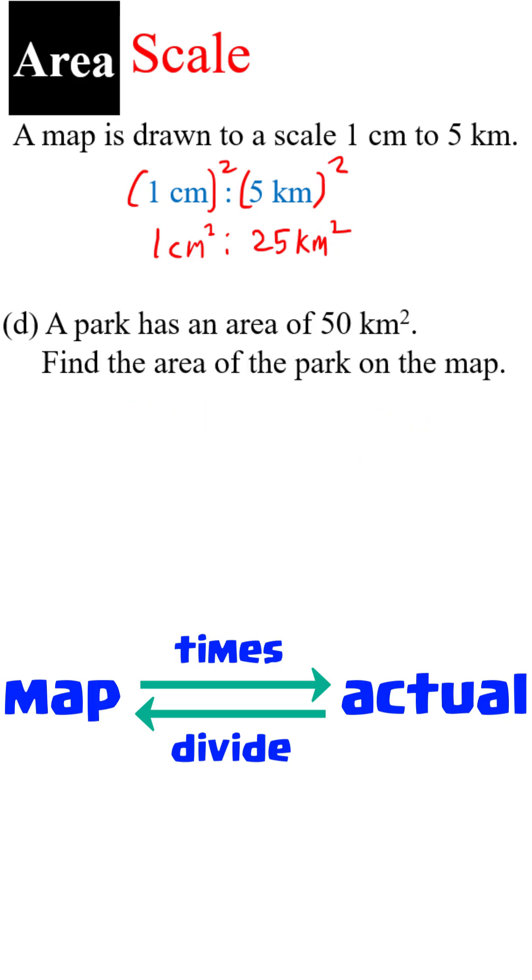Actual to map is divide, so 50km² divided by 25 will give us 2cm². So you just have to remember.